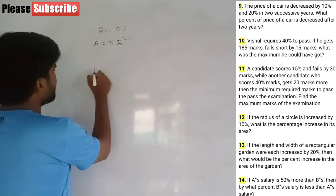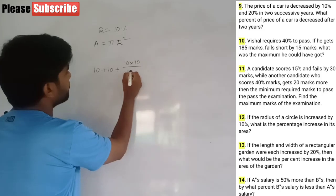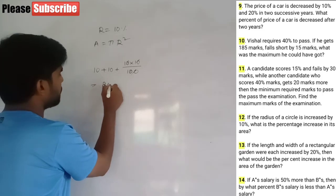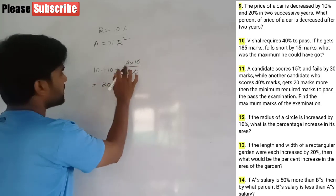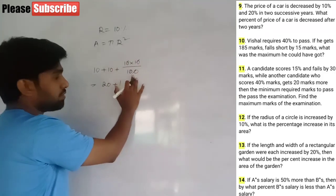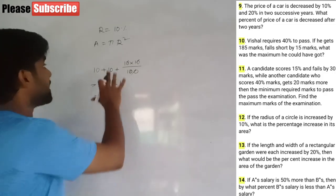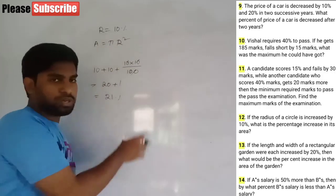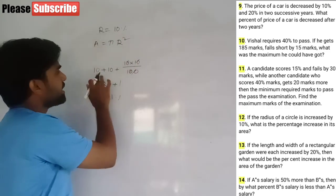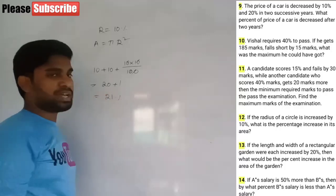Apply the formula: 10 plus 10 plus (10 into 10) by 100. Cancel zeros, so 10 plus 10 is 20 plus 1, giving 21% increase in area. Use the net increase formula x plus y plus (x into y) by 100 for easy answers.